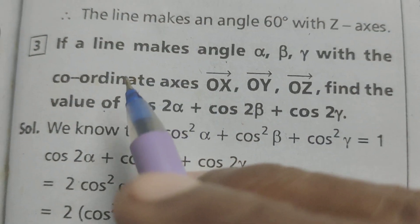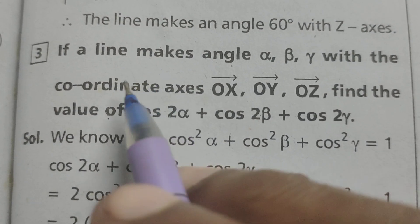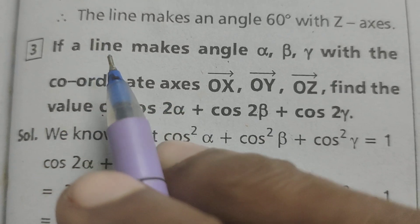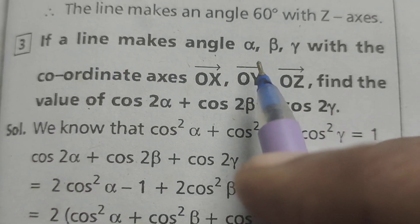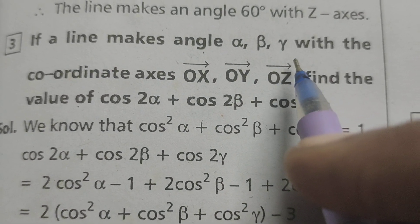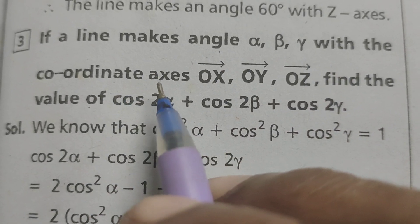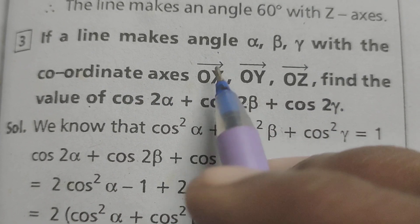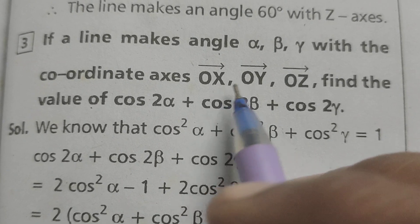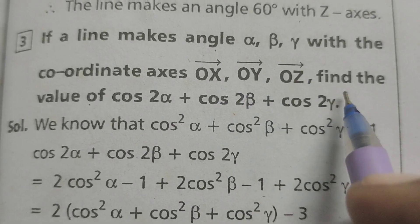This is Dr. Ati. Now today we are going to explain this problem. If a line makes an angle alpha, beta, gamma with the coordinate axes OX bar, OY bar, OZ bar,